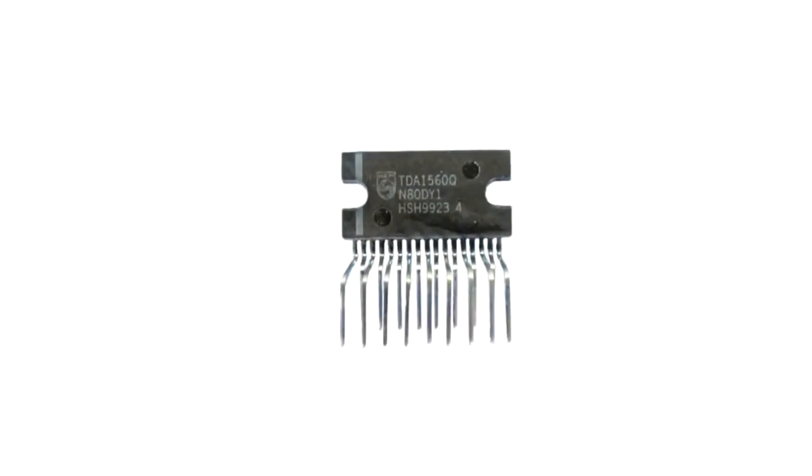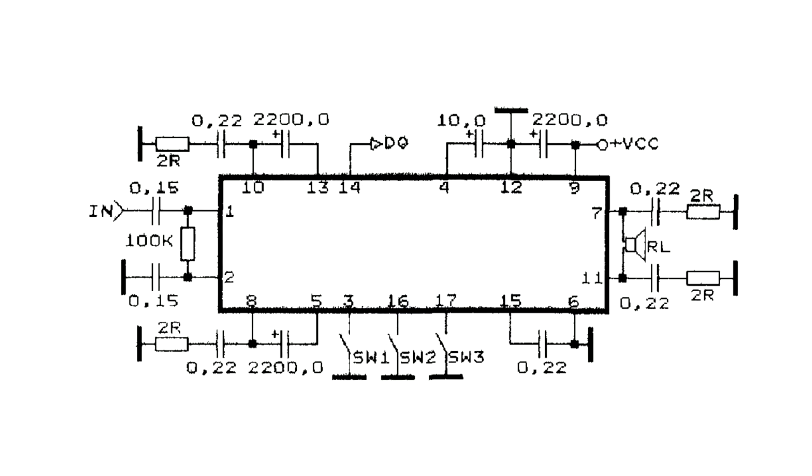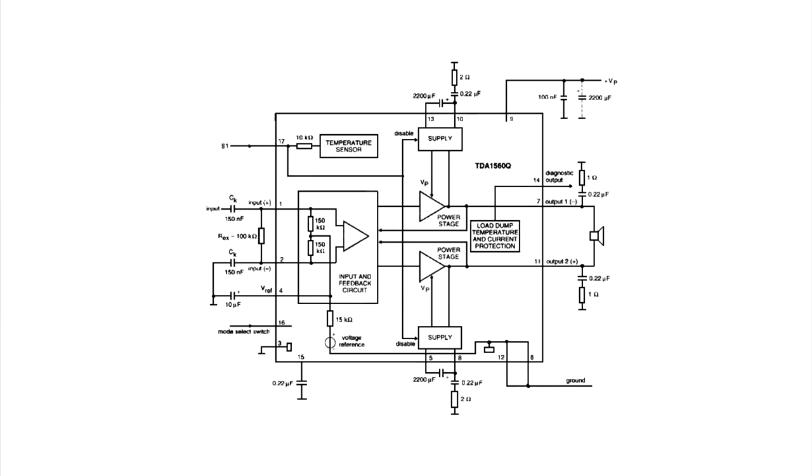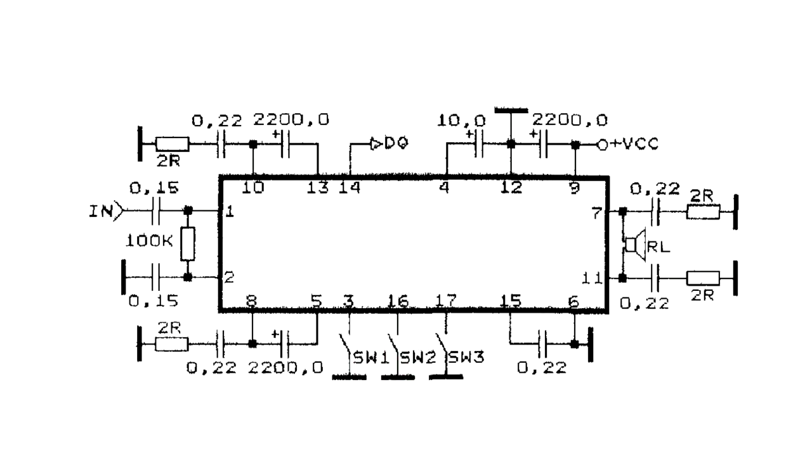There are amplifiers of class H. They can give more than 18 watts at 12V. But these amplifiers include small inverters that charge capacitors and, if necessary, connect these capacitors to the system and increase the supply voltage to achieve higher power.